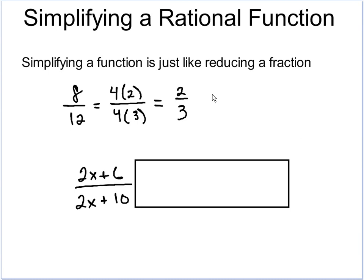Now when we're looking at rational functions with variables, it's actually the exact same thing. We're going to look at what we can factor out of the tops and the bottoms of the fraction. So in this case, I have 2x plus 6 over 2x plus 10.